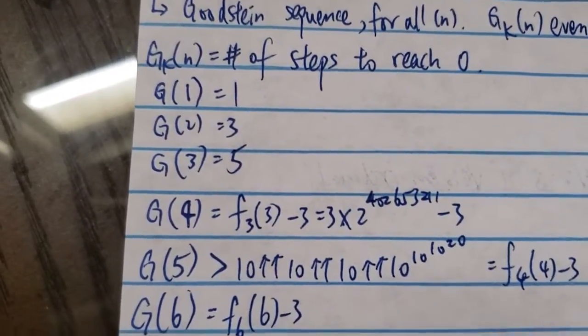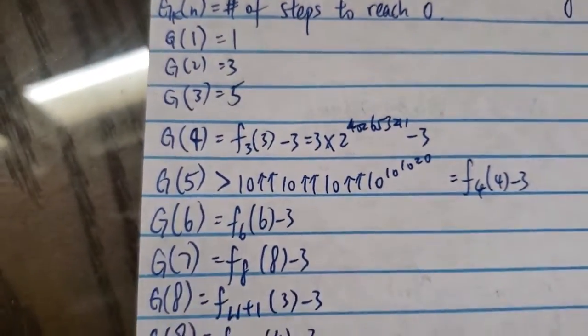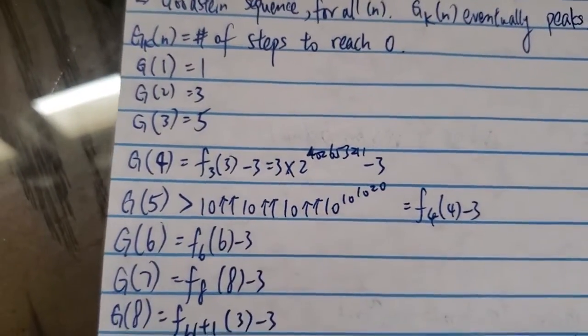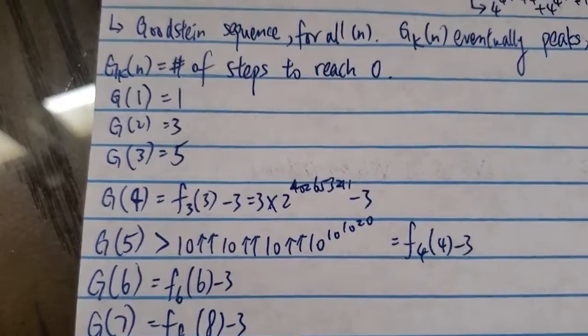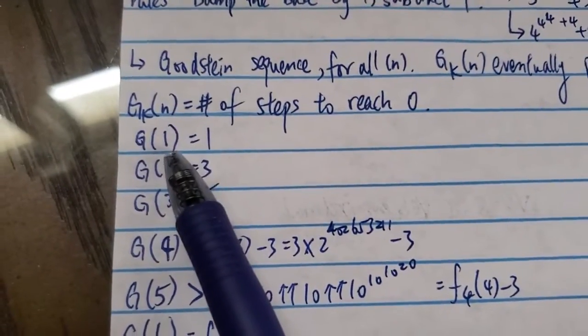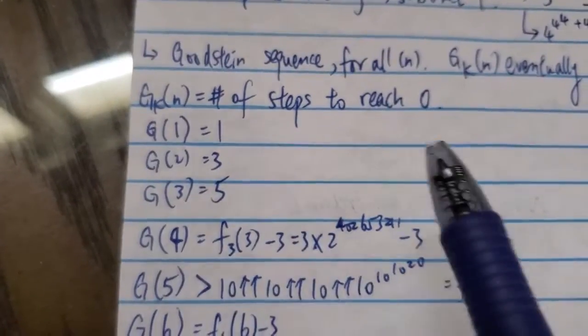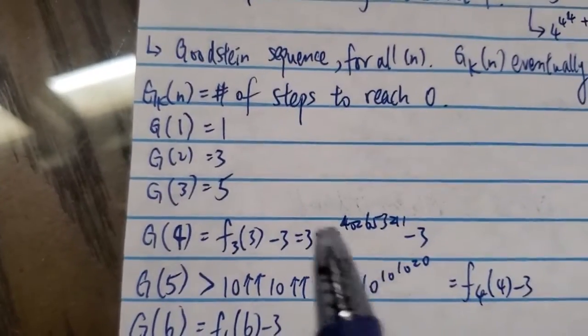So basically, here are some of the numbers. Again, these are all from the Googleology wiki. So if you use 1, if the number is 1, of course, it takes just 1 step to get to zero.